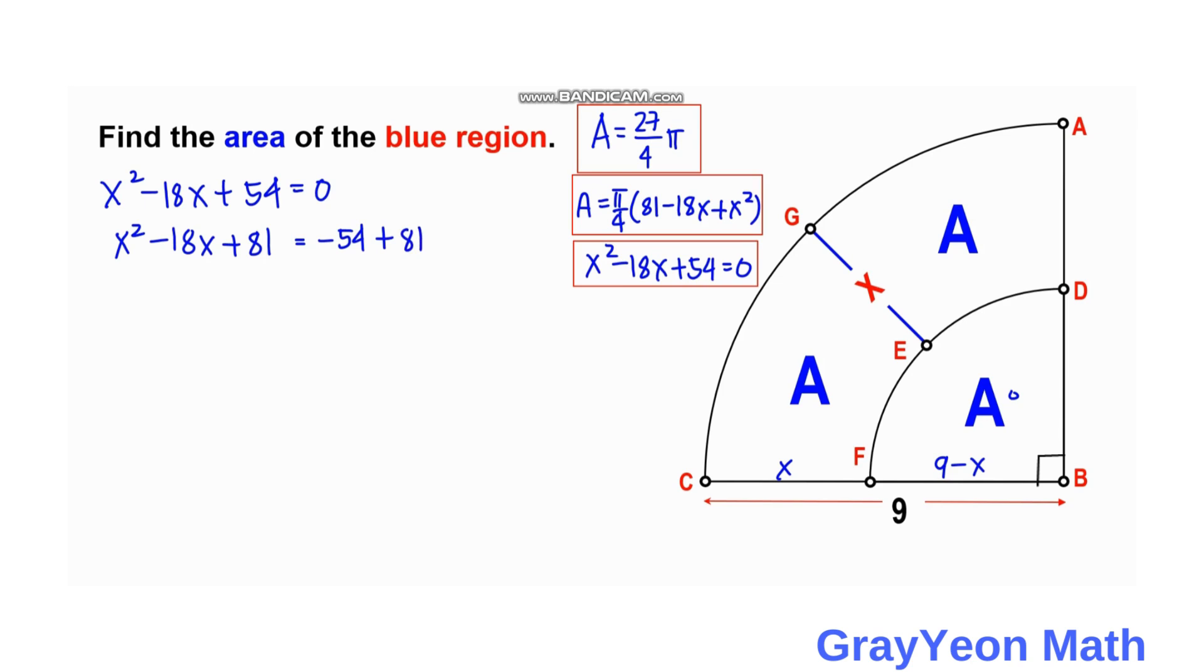Since this is now a perfect square, on the left-hand side we can write it as X minus 9 squared. It equals 27.